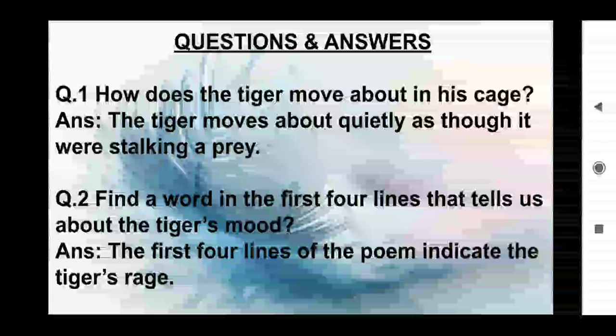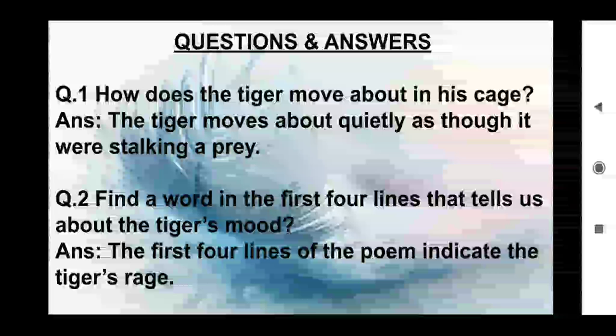Question 1: How does the tiger move about in his cage? Answer: The tiger moves about quietly, as though it were stalking a prey.